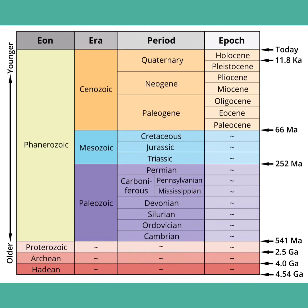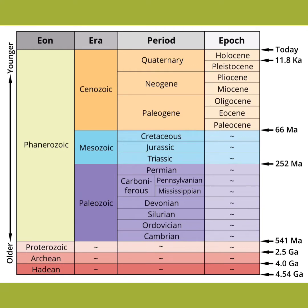Periods of geological time are subdivided into Epochs. In the Paleogene period, we have three epochs: Paleocene, Eocene, and Oligocene. In the Neogene period, there were two epochs — the Miocene and Pliocene. And in the Quaternary period, the Pleistocene and Holocene.